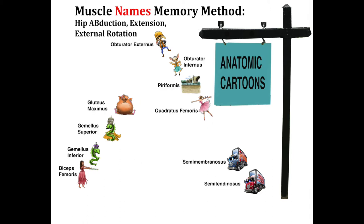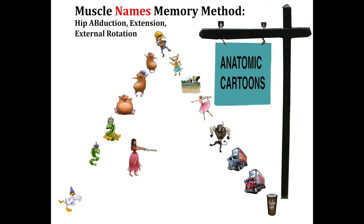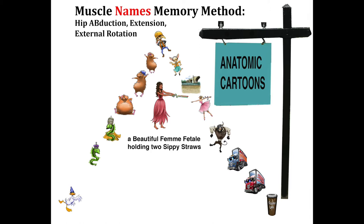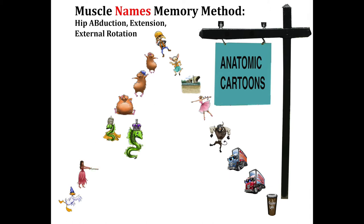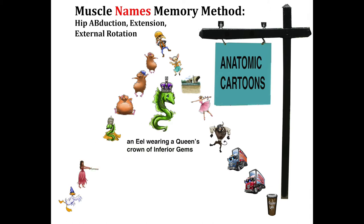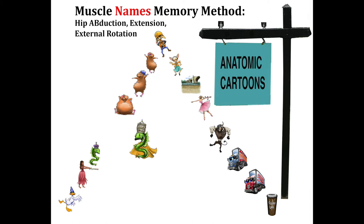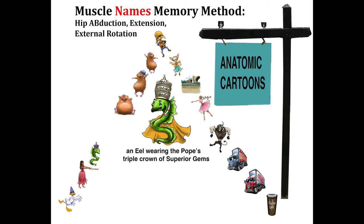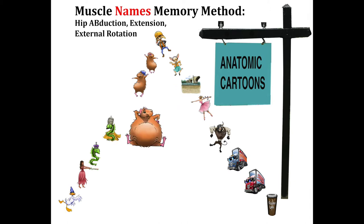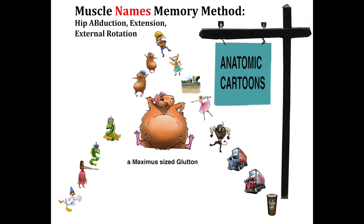We turn now to the ten new muscle cartoons and their names. A beautiful femme fatale holding two sippy straws — Biceps Femoris. An eel wearing a queen's crown of inferior gyms — Gemellus Inferior. An eel wearing the pope's triple crown of superior gyms — Gemellus Superior. A maximum-sized glutton — Gluteus Maximus.